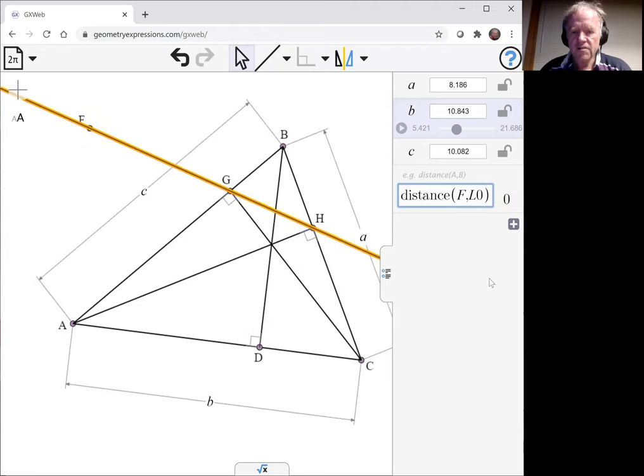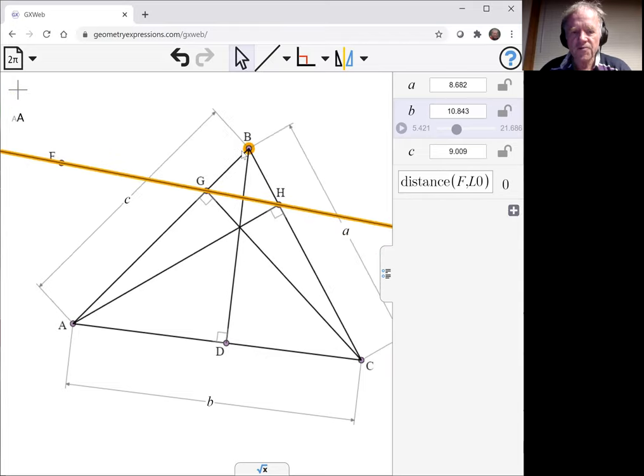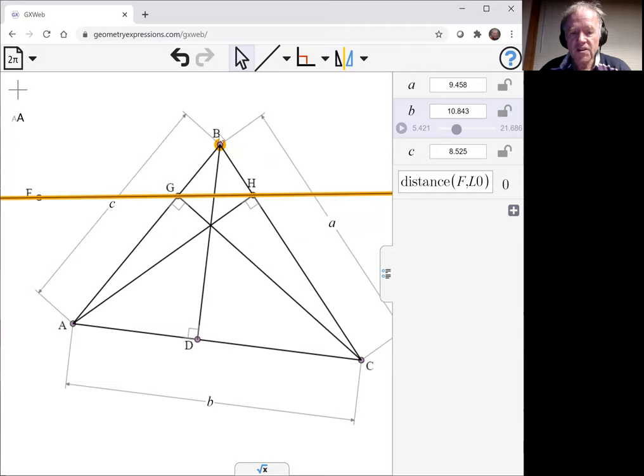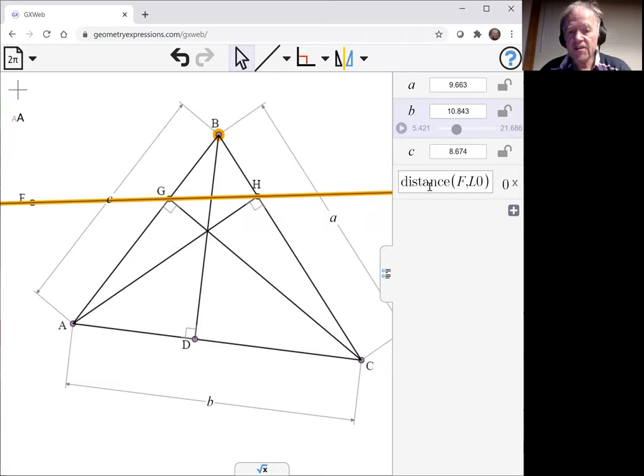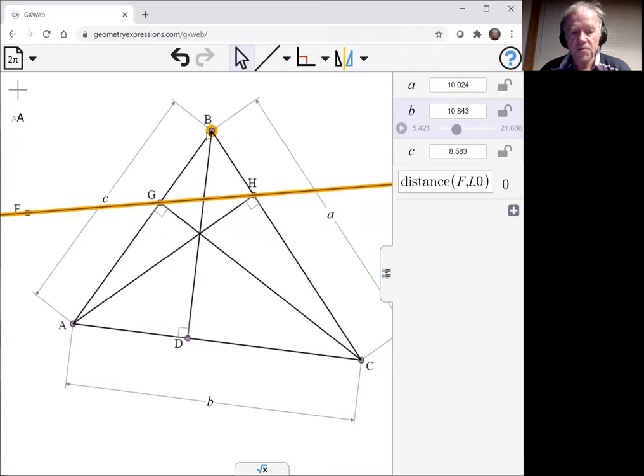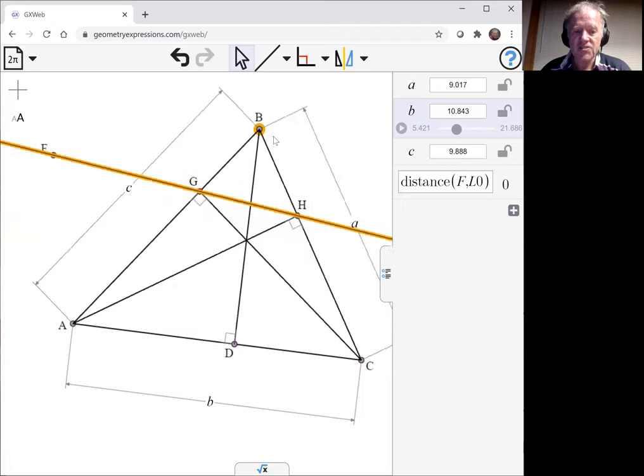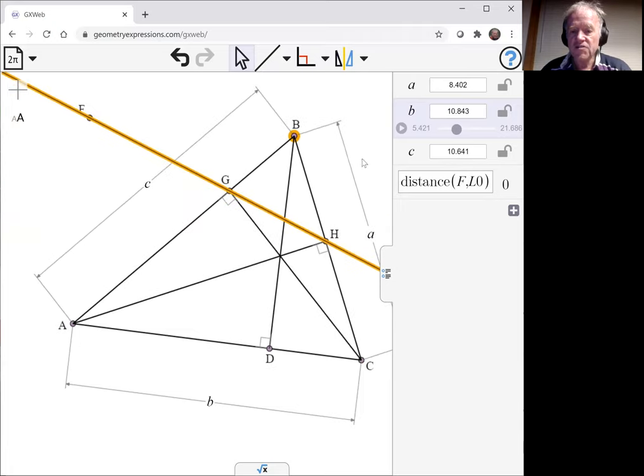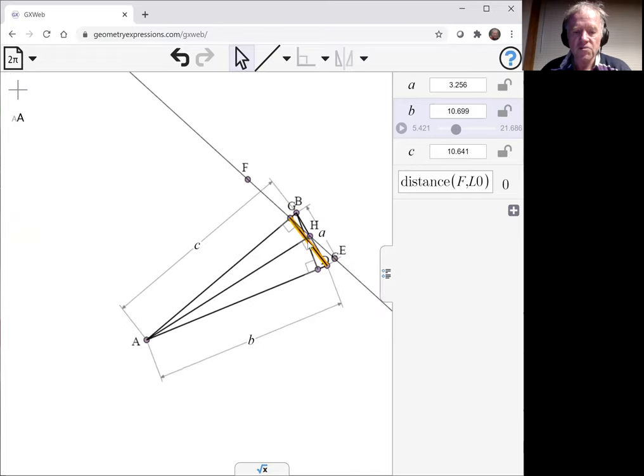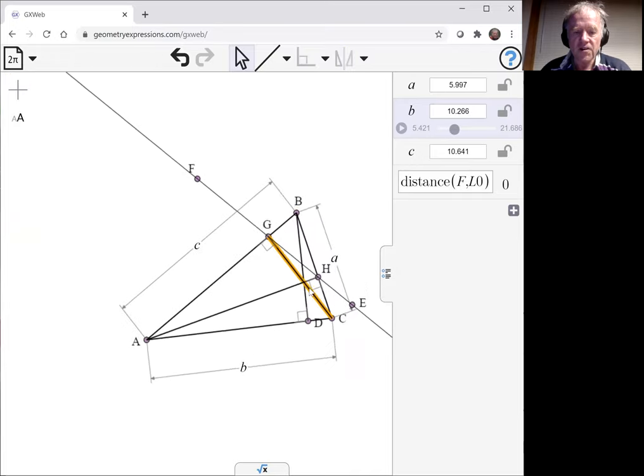And we see that is zero. Now what that is telling us is it's making a measurement from that drawing. Now we're seeing here that it is actually staying zero, but that's a numeric measurement just made from that one instance of the drawing. So it's not really proof. It's a kind of verification, if you like, that in a number of instances this does measure to be zero.